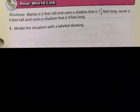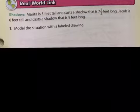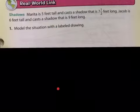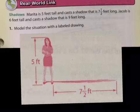Let's make the real world link now. Shadows. Marita is five feet tall and casts a shadow. Cast means to lay out a shadow. The shadow that she makes, she casts a shadow that is seven and a half feet long. So she's five feet tall and her shadow is even longer. That means it's probably closer to the evening time. Jacob is six feet tall and casts a shadow that is nine feet long. So now we have to model the situation with a labeled drawing.